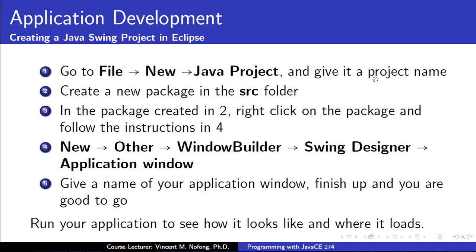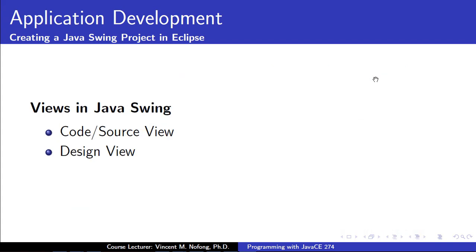Assuming we have installed our Java Swing application, we would need to create projects. These are the steps we need to take to do that. In Java Swing, we have two views: the code view or the source view, as well as the design view. We'll look at these in practicals and what we can do.